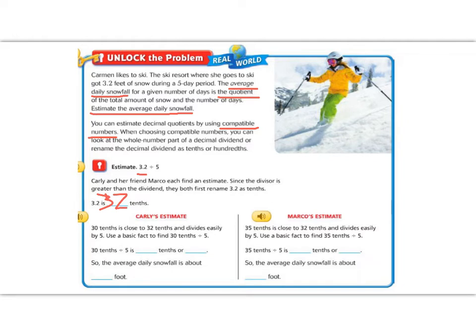So Carly says that 30 is close to 32 and divides evenly by 5. Well, I agree. If we're going from 32 to 30, that's close, and 5 does go into 30. So now we can divide.